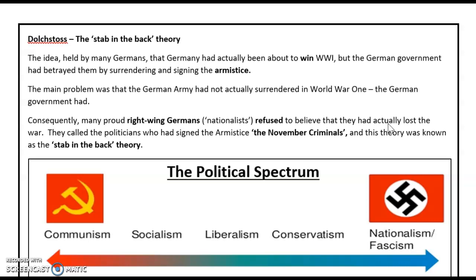Dolchstoß was an idea held by many Germans that Germany had actually been about to win World War I, but the German government had betrayed them by surrendering and signing the armistice. The main problem was that the German army hadn't actually surrendered — the German government had. Consequently, many proud right-wing Germans, known as nationalists, refused to believe they had actually lost the war. They called the politicians who signed the armistice the 'November criminals', as they ended the war in November 1918. This theory was known as Dolchstoß, or the Stab-in-the-Back Theory, and meant the Weimar government had alienated many people from the very beginning.